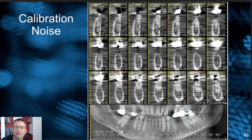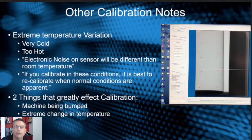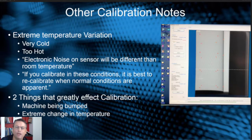Other calibration notes: extreme temperature variation could affect your image quality — very hot or very cold. If you have an office in a hot part of the country where it starts out cool in the morning but a window lets the sun bake onto the sensor, that extreme temperature variation can affect your image quality. Electronic noise at the center will differ from room temperature. According to the engineers, if you calibrate in extreme hot or cold conditions, it's best to recalibrate when normal conditions return. If your machine is next to a window with extreme temperature variations, it doesn't hurt to calibrate once in the morning and once after lunch.